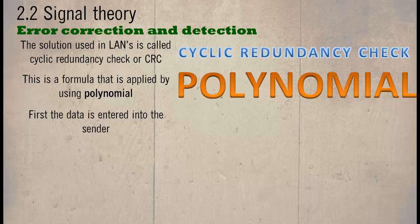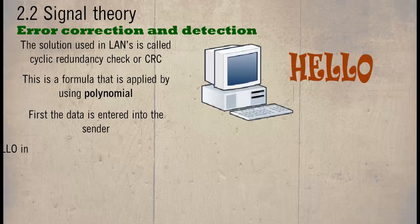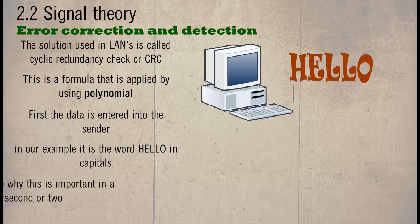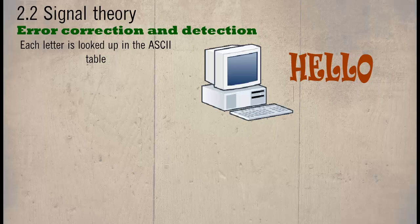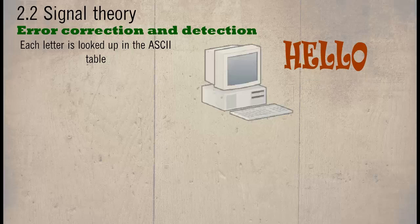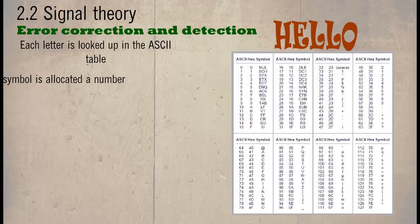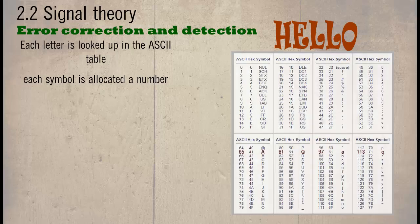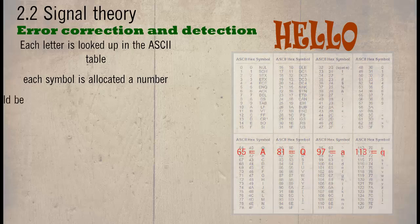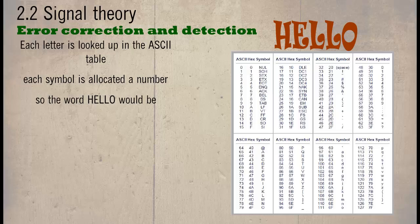First, the data is entered into the sender. In our example, it is the word HELLO in capitals. We shall see why this is important in a second or two. Each letter is looked up in the ASCII table. Each symbol is allocated a number, so the word HELLO would be 72, 69, 76, 76, 79.